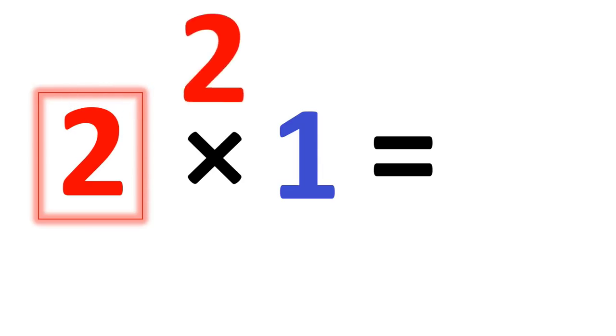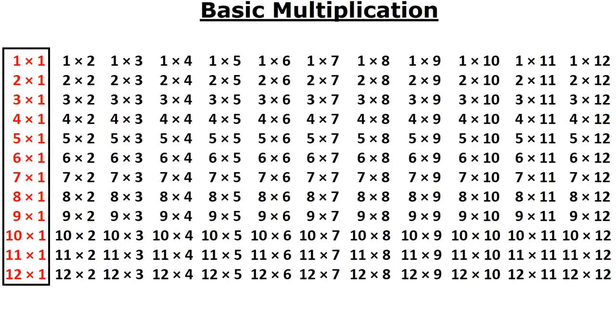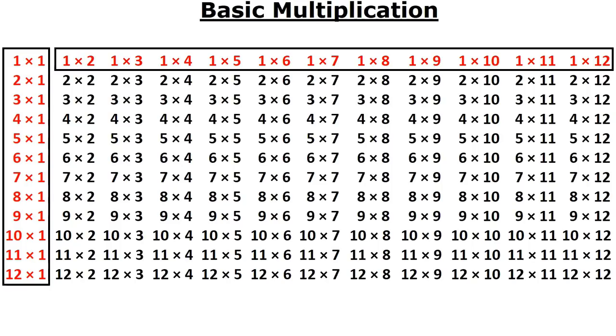So we begin with the easiest multiplication rule to remember, which is multiplying anything times the number 1. Anything times the number 1 is that number. 1 times 1 is 1, 2 times 1 is 2, 3 times 1 is 3, etc. Well, you also know the reverse. You also know 1 times 2, 1 times 3, 1 times 4. So from that one simple rule, you actually know 23 Math Facts.